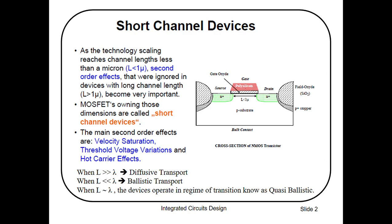Short channel devices: as technology scaling reaches channel lengths less than one micrometer, second-order effects that were ignored in long channel devices with channel length greater than one micrometer become very important. MOSFETs having channel length less than one micrometer are known as short channel devices. There are a lot of second-order effects that appear in short channel devices, and one important phenomenon is ballistic transport.